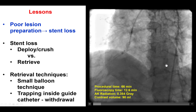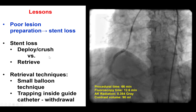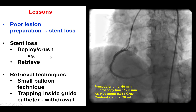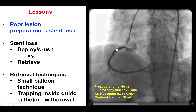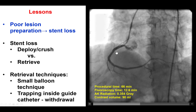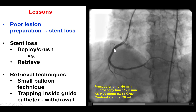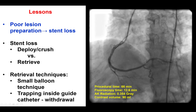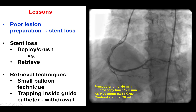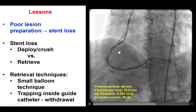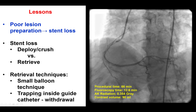Of course, that leads to loss of distal guide wire position, which may not be a good idea in some cases but may be a good option in others. The second lesson is that if stent loss occurs, we should not forget that retrieving the stent is just one option and deploying or crushing is another very good option. In this particular case, retrieval was preferred because the stent was partially inside and partially outside the guide catheter, making it hard to get the stent completely into the vessel to deploy or crush it. If retrieval is decided, the small balloon technique is the easiest and requires the least equipment. If it doesn't work, another option is to trap the lost stent inside the guide catheter and then withdraw both the guide catheter together with the trapped lost stent as a block. Thank you.